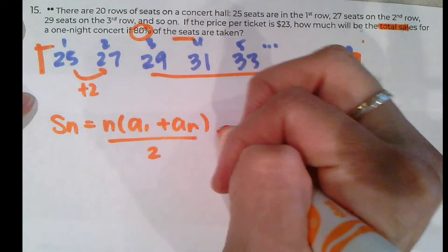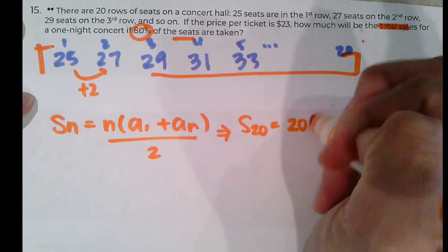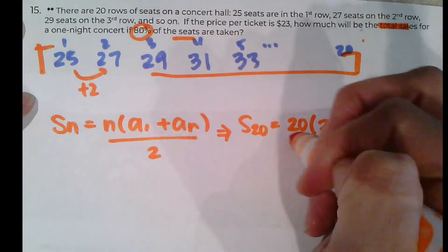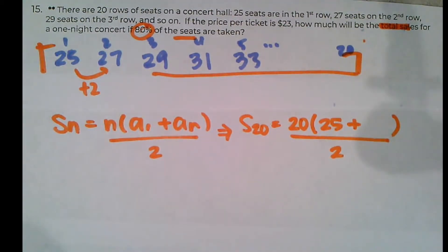And we need to do this for 20 rows. We're going to be finding S of 20. First row has 25. I'm going to have to figure out how much is in the 20th row. So I could always count my way over to the 20th row or I can be a little more clever about it.